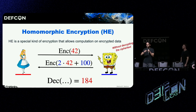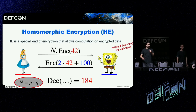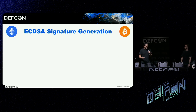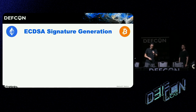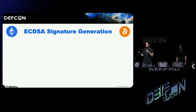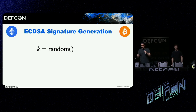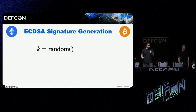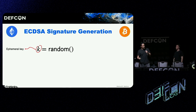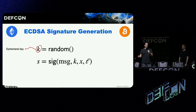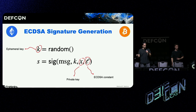We'll be looking at the most vanilla kind of homomorphic encryption, parametrized by a public key N, which is the product of two big primes — this detail will become relevant later. The last background item is the ECDSA signature scheme, the most important signature scheme in the blockchain space, used by Bitcoin and Ethereum. To generate an ECDSA signature: first you sample a random number k — the ephemeral key, chosen afresh with each signature. Then you compute a function of the message, the ephemeral key, the private key, and an ECDSA constant L that everybody knows.